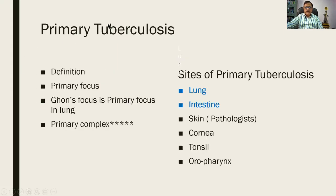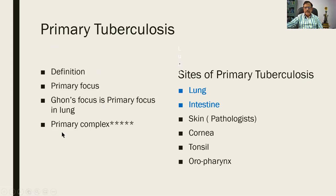What we are concentrating on today is primary tuberculosis. Primary means first — until then the patient has not been affected. There is a primary tuberculosis focus, which is the site of first affection in an individual not otherwise exposed. The initial lesion is called the primary focus, and the name given to the primary focus in the lung is the Ghon's focus.